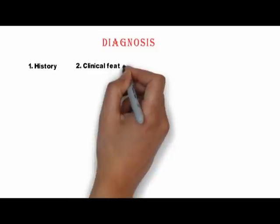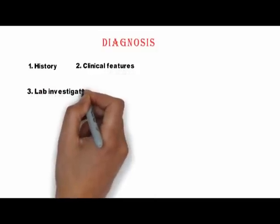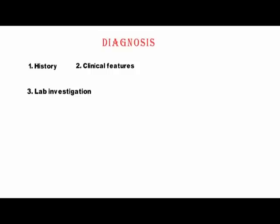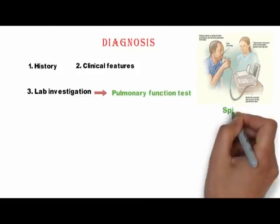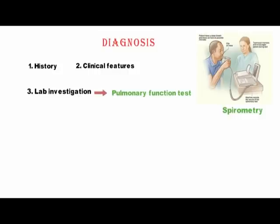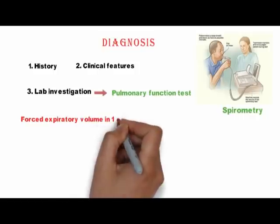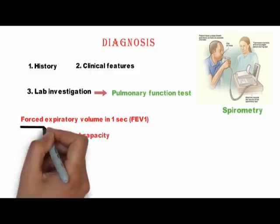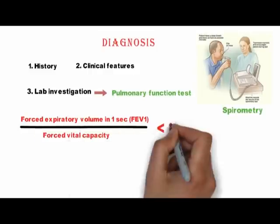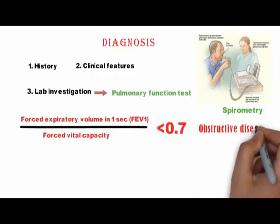Diagnosis is based on history, clinical features, and laboratory investigation. The laboratory evaluation is predominantly focused on pulmonary function testing. The most important PFT is spirometry, in which a patient breathes in and out through a mouthpiece and the amount of air inhaled and exhaled is recorded. It includes measurement of FEV1 and FVC. When the ratio of FEV1 to FVC is less than 0.7, it indicates obstructive disease like asthma.